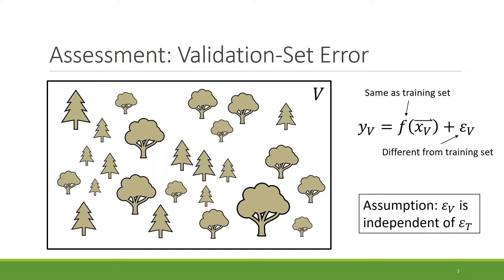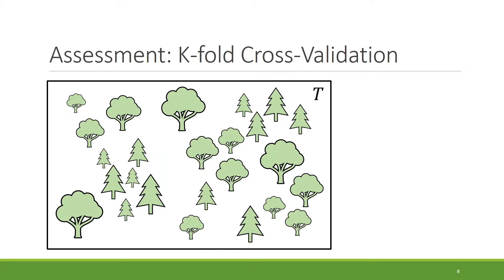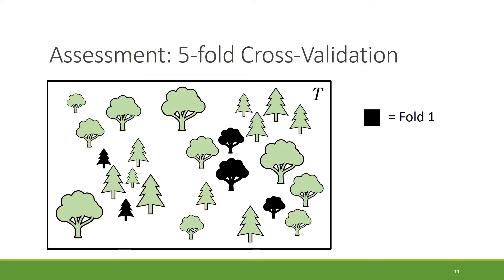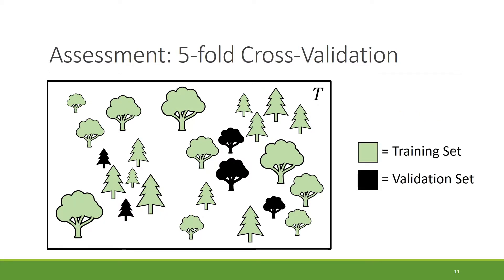Validation sets are good, but their drawback is that data used for validating is not used for training, which hurts our error estimates because models typically perform better when trained on more data. To get around this, we can do cross-validation — these days practically synonymous with k-fold cross-validation. In five-fold cross-validation, we randomly divide data into five folds. With 25 trees, each fold has five trees. For fold one, we treat those trees as a validation set, train on the remaining 20, record the error, and repeat for each fold, averaging the results. The idea is that for each fold, the training and validation sets include different observations, so hopefully they're independent — more or less true when observations are IID, but very not true in most spatial settings.